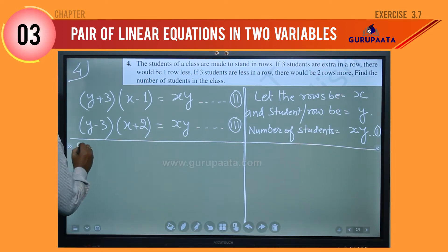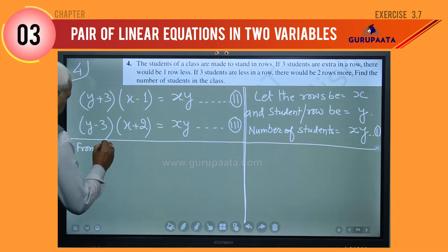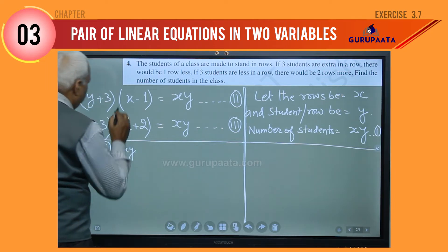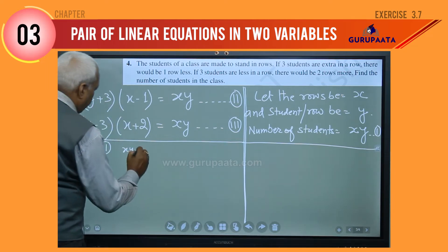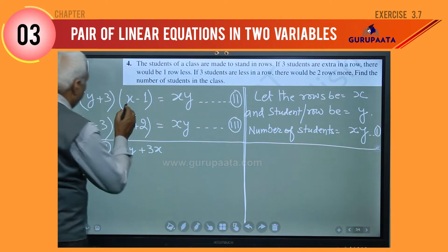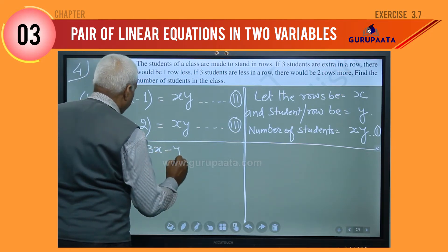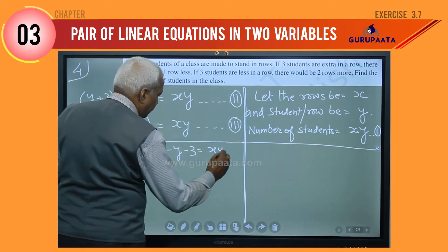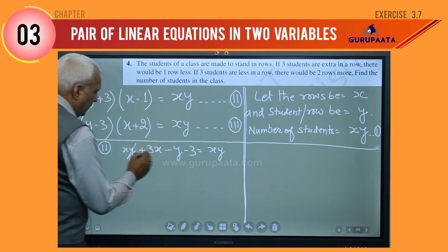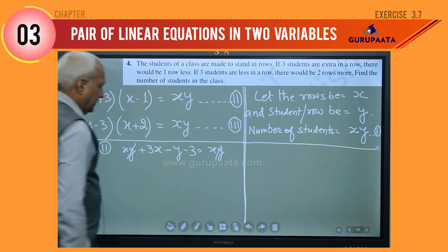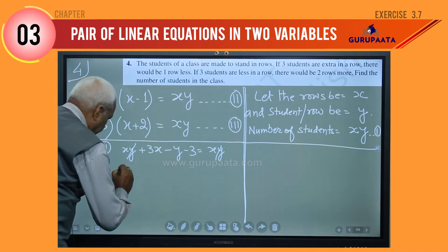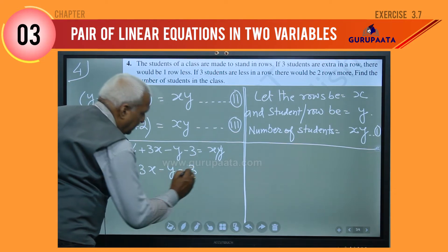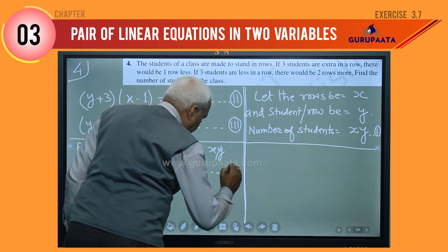From equation two, we expand (x minus 1)(y plus 3) = xy. This gives xy plus 3x minus y minus 3 equals xy. The xy terms cancel, and we can write 3x minus y equals 3. Let this be equation number four.